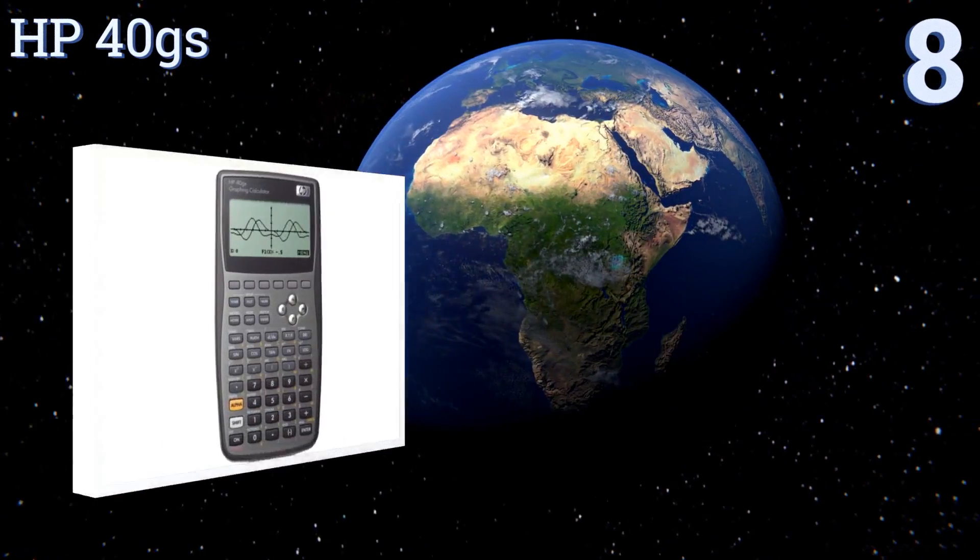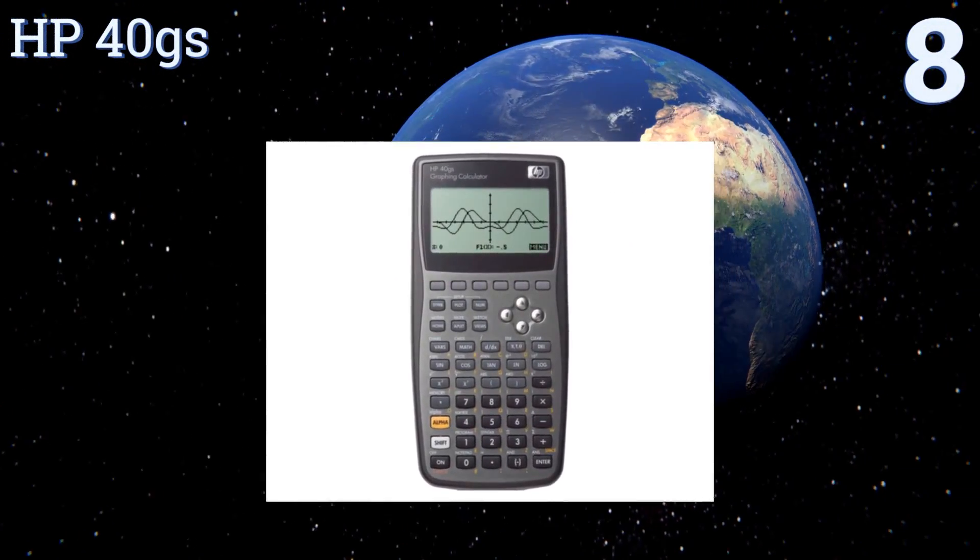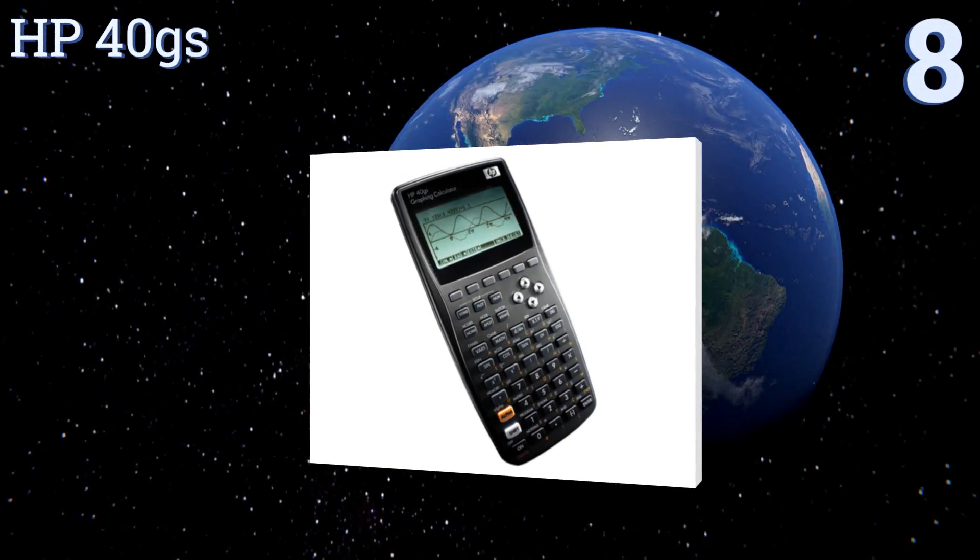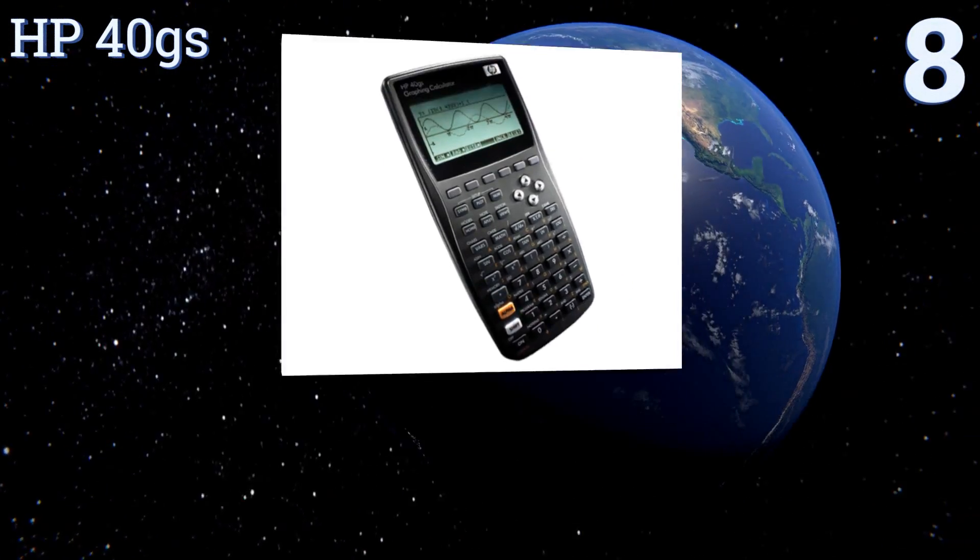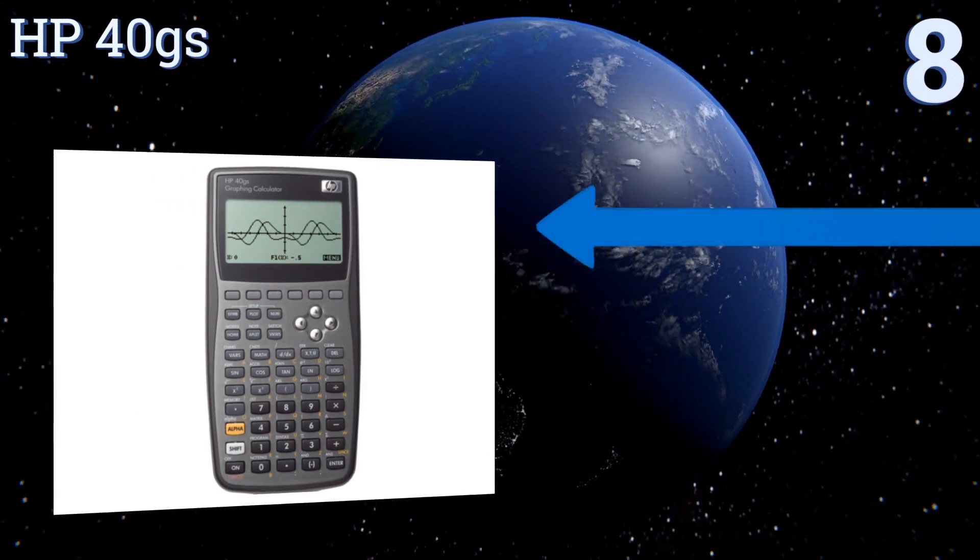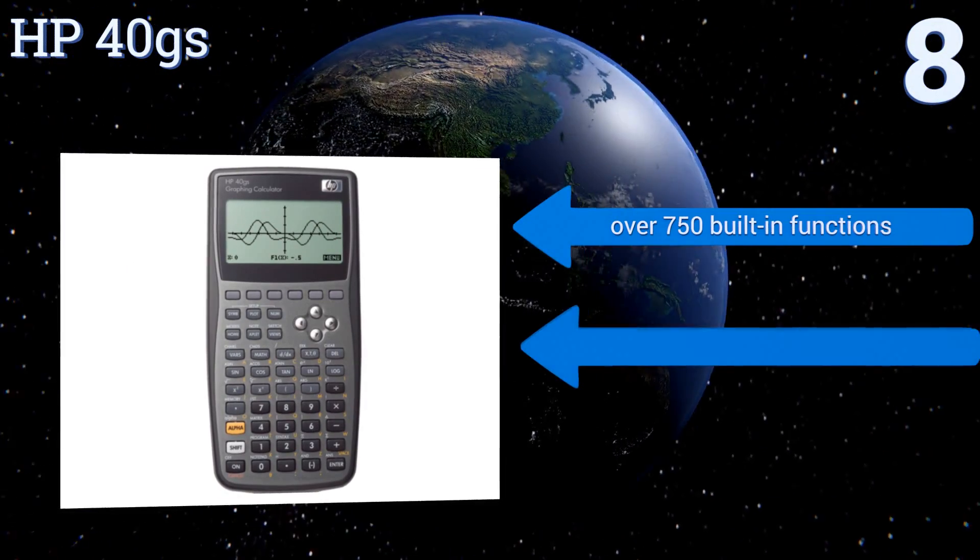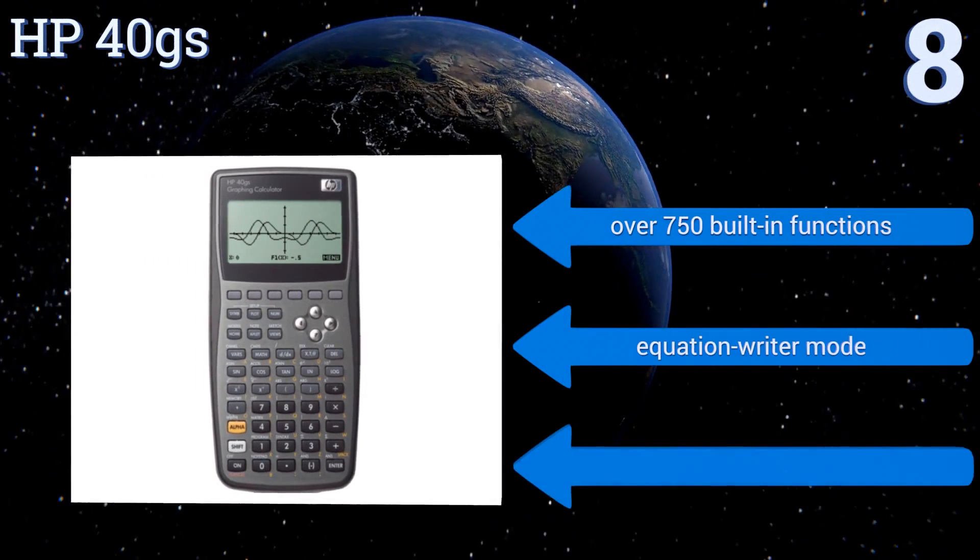Starting off our list at number 8, the HP40GS is ideal for high school students taking math, science or engineering classes. It sports an adjustable contrast display and is a bit cheaper than most models with similar functionality, so it's a great starter choice.